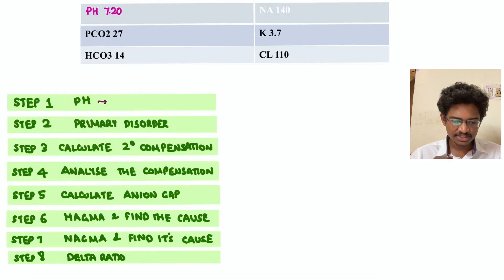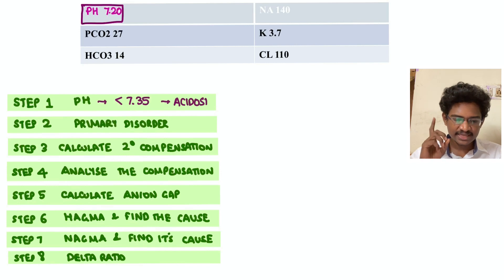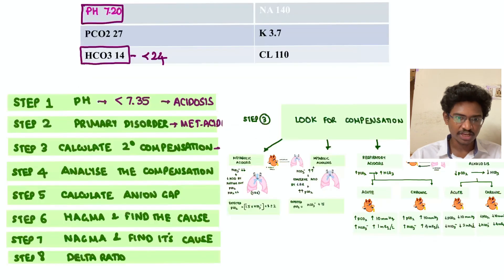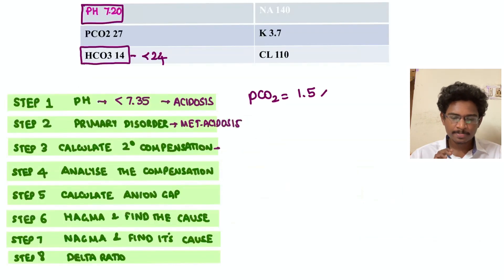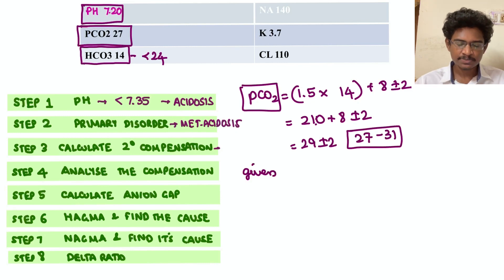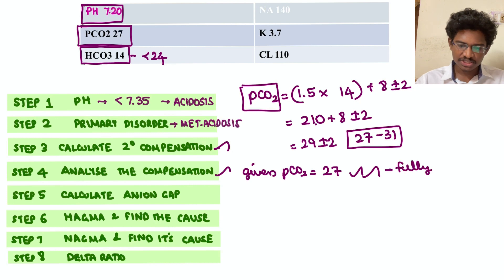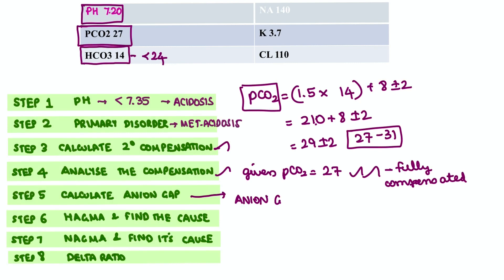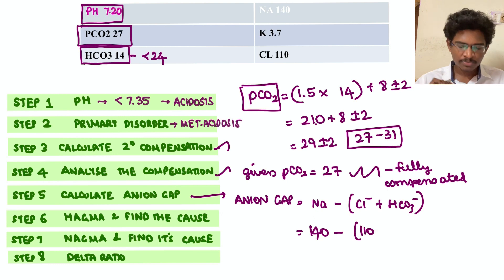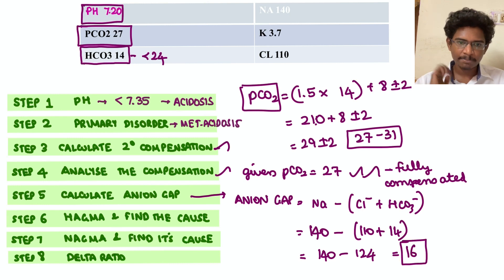Step one: pH 7.2, less than 7.35 — acidosis. Step two: bicarb 14, less than 24 — metabolic acidosis. Step three: compensation — 1.5 × 14 + 8 ± 2; PCO2 is 27 — completely compensated. Step five: anion gap = sodium 140 minus (chloride 110 + bicarb 14) = 16, which is more than 12 — high anion gap metabolic acidosis.